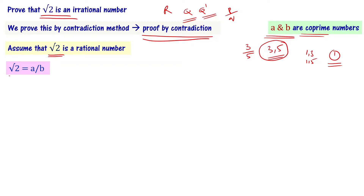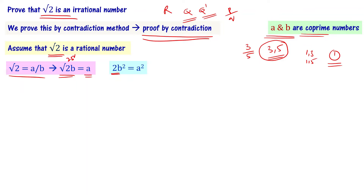Now let me rearrange this equation. Root 2 equals A by B, which can be written as root 2 times B equals A. Squaring both sides gives us 2B squared equals A squared.